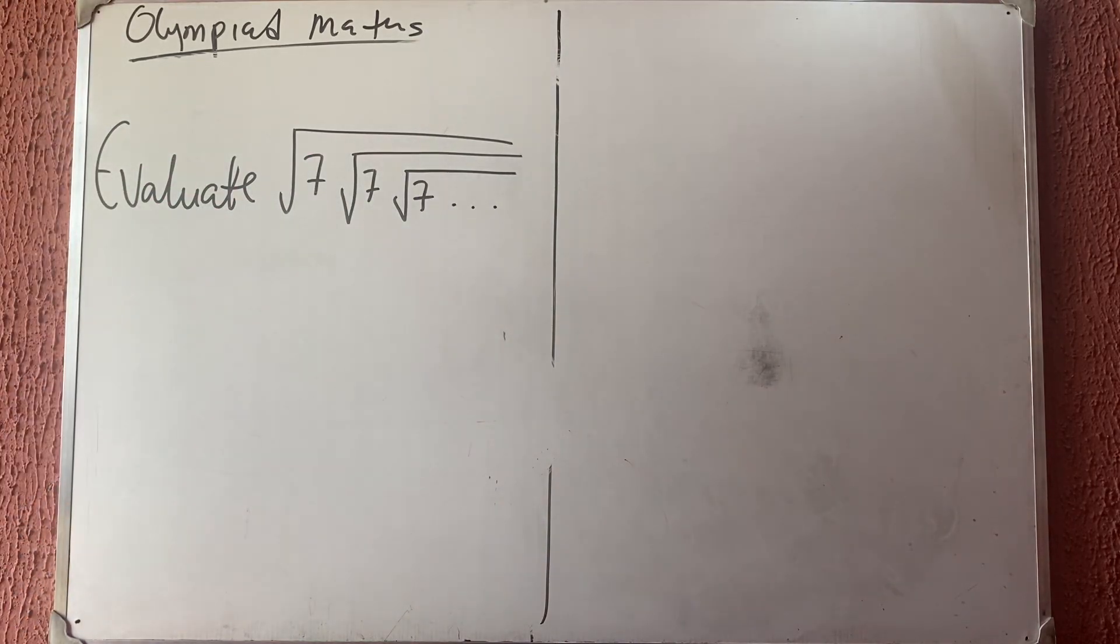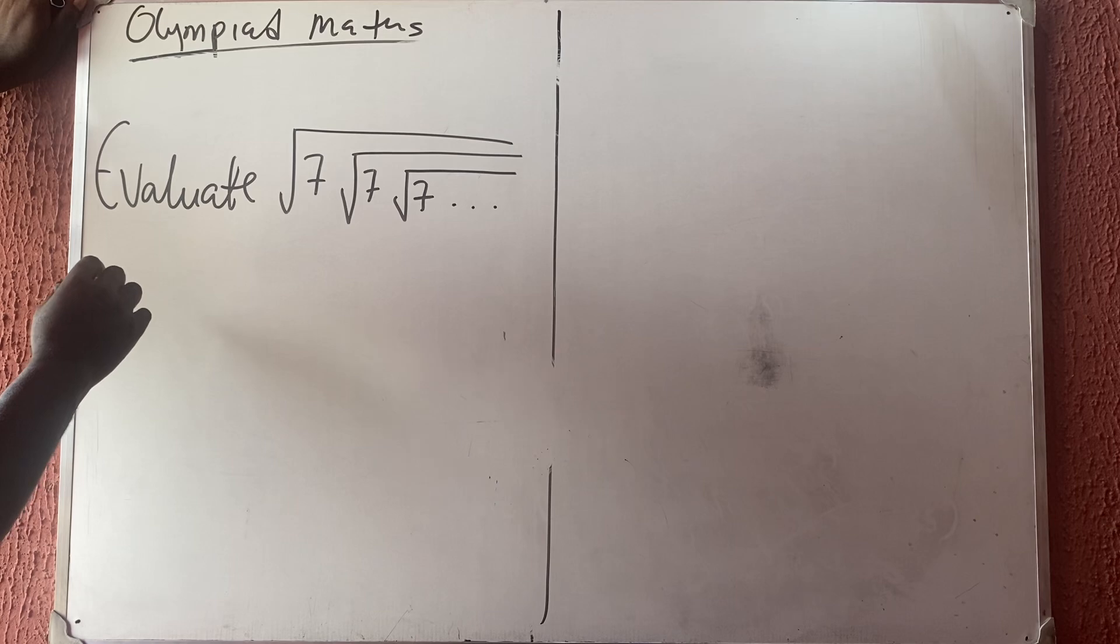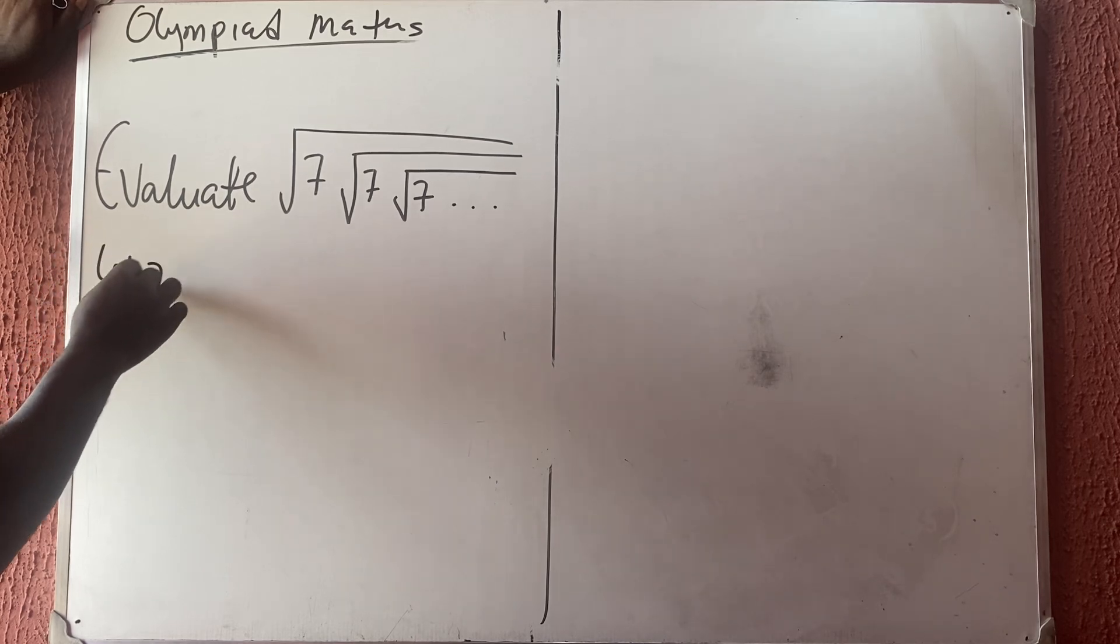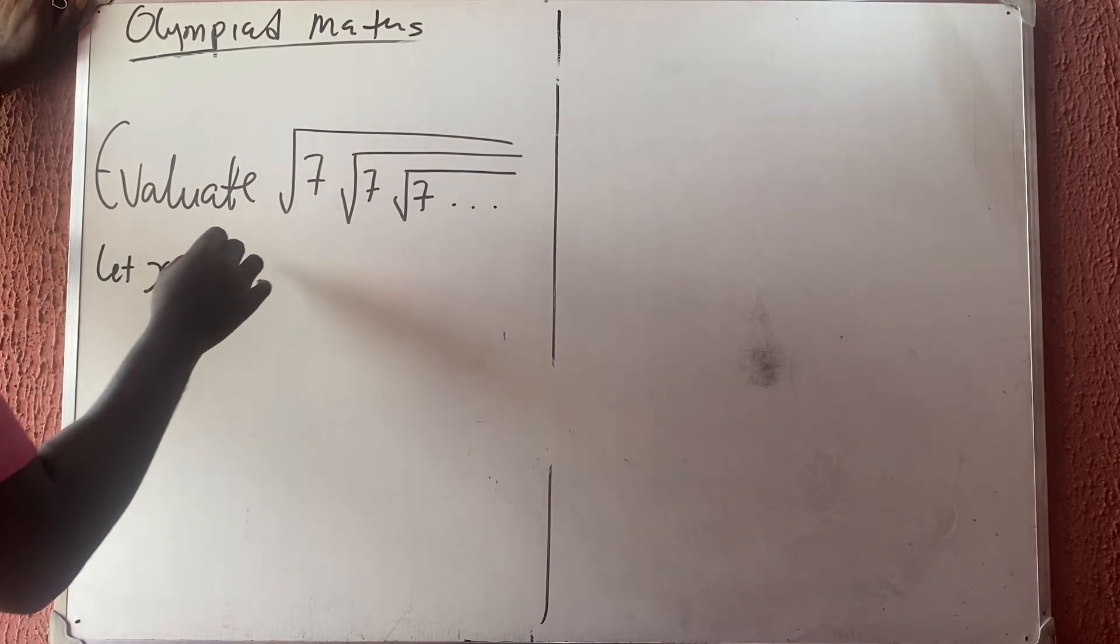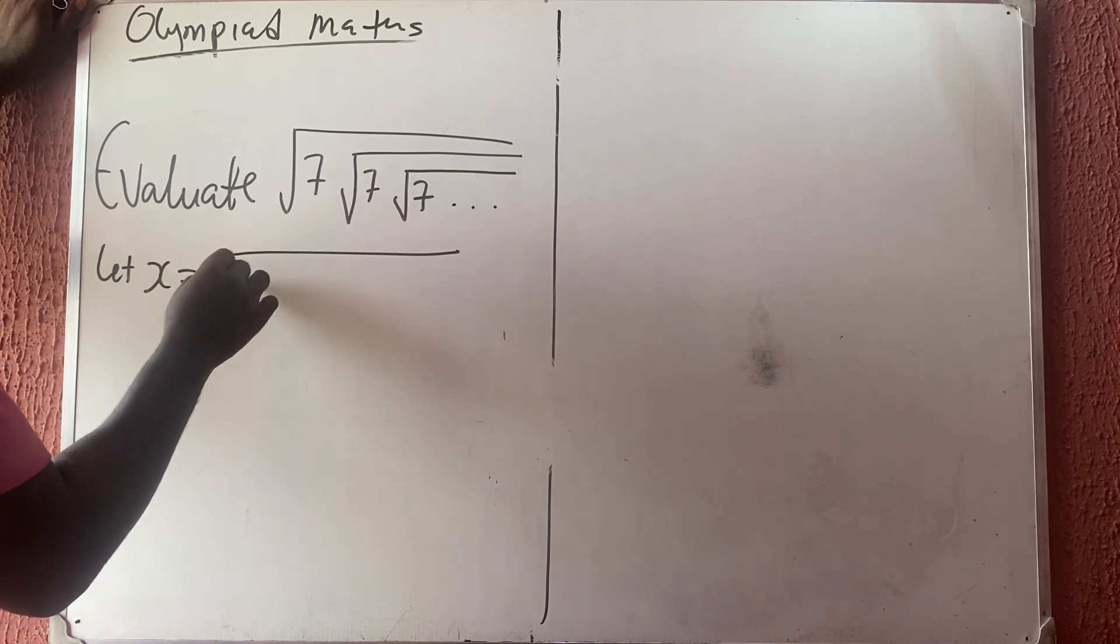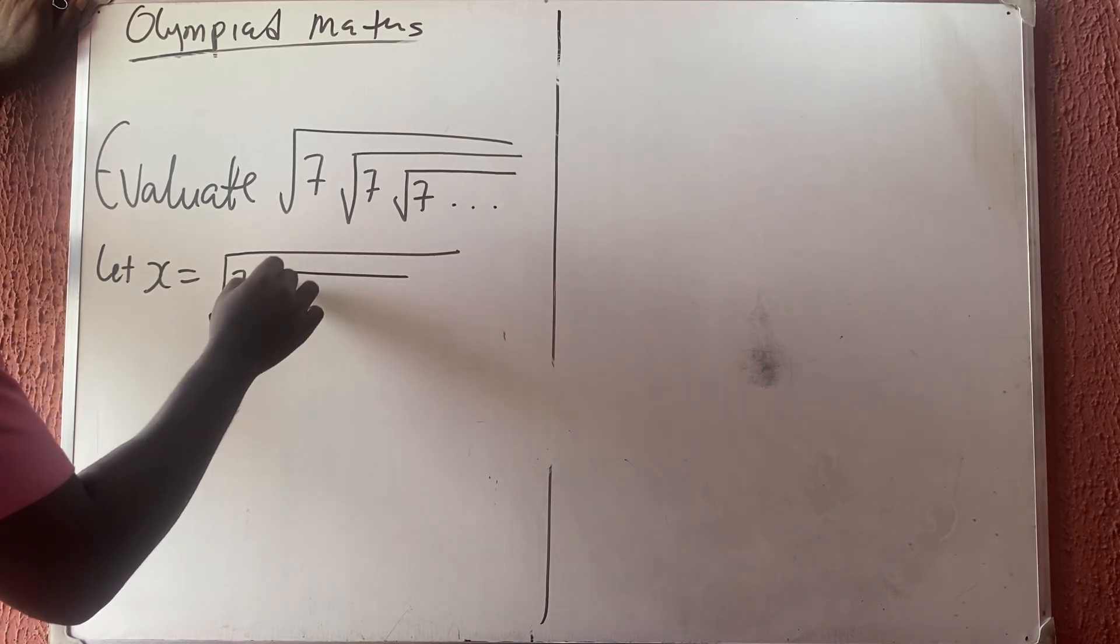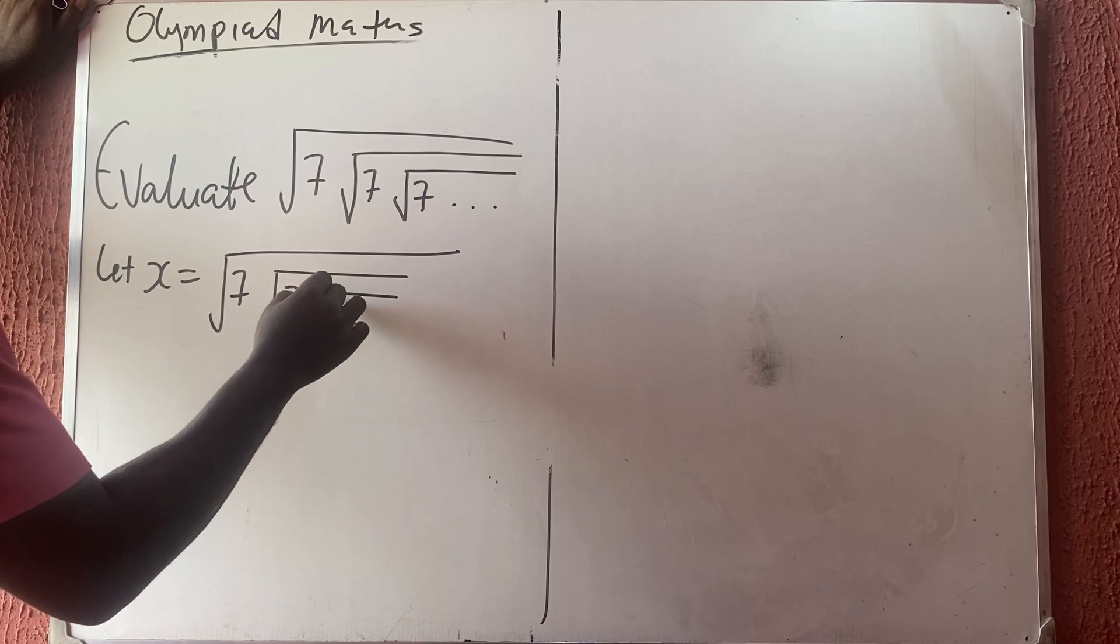Now this is very simple. I can say let x be equal to that: square root of 7, inside the square root of 7, inside the square root of 7, that continues to infinity.